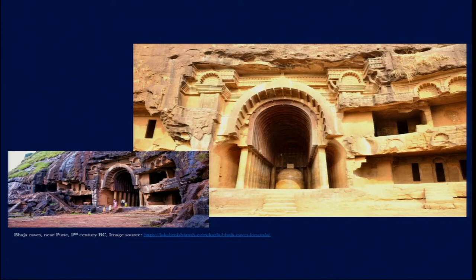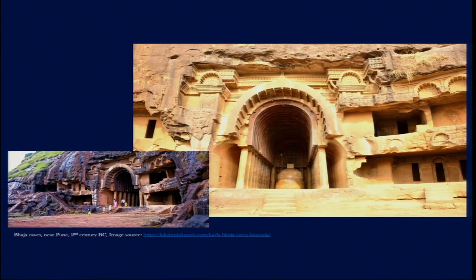Even here we can see what kind of structures were implemented. There is a large arched gateway — again a trifoil arch — the same kind of structure we have seen in the Lomas Rishi Cave in Bihar, now appearing in Maharashtra. This rock-cut, excavated structure is a trifoil arch that also has wooden support-like forms which are actually made of stone. They serve only as ornamentation or a reminder that this architecture was inspired by wooden structures.